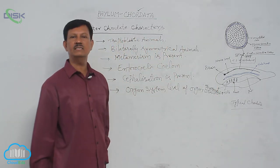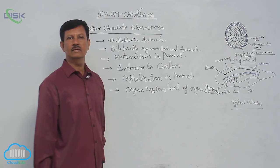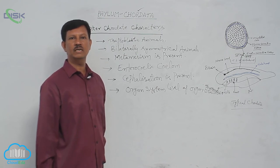The alimentary canal is complete with the mouth found at the anterior region and the anus at the posterior region.